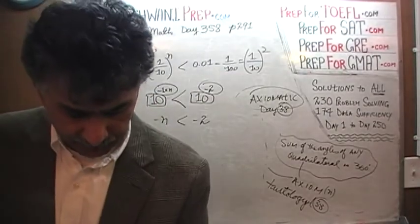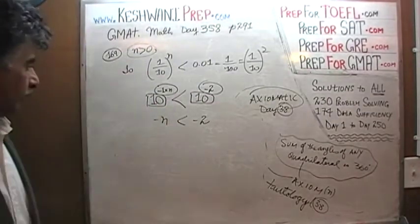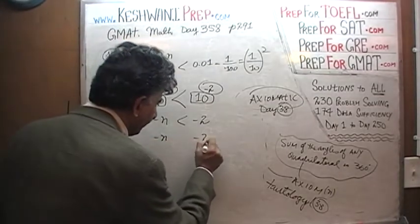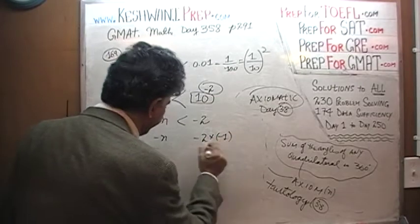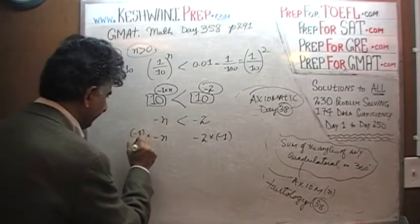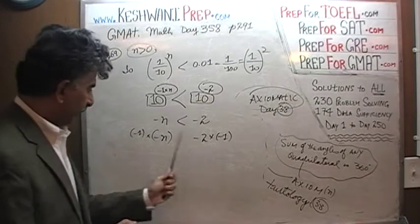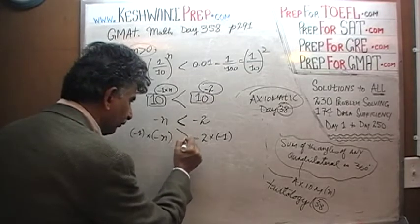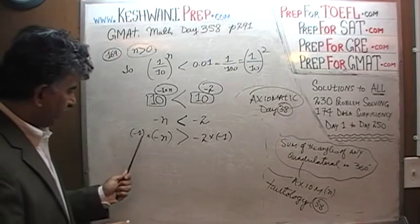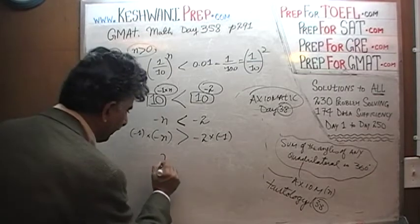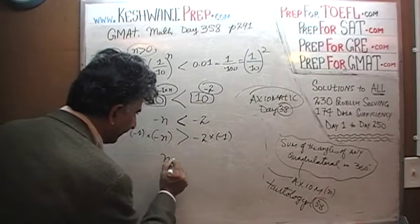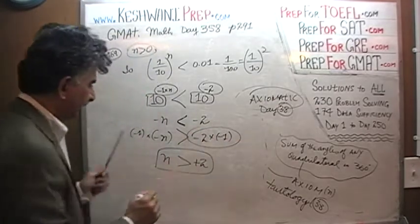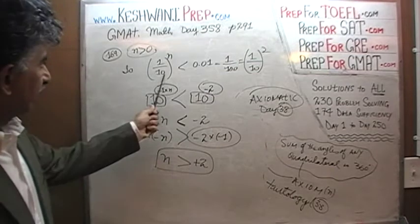Is negative N less than negative 2? If we multiply both sides of this inequality by negative 1, the direction of the inequality switches — so what it boils down to is: is N more than 2? That's what they're asking.